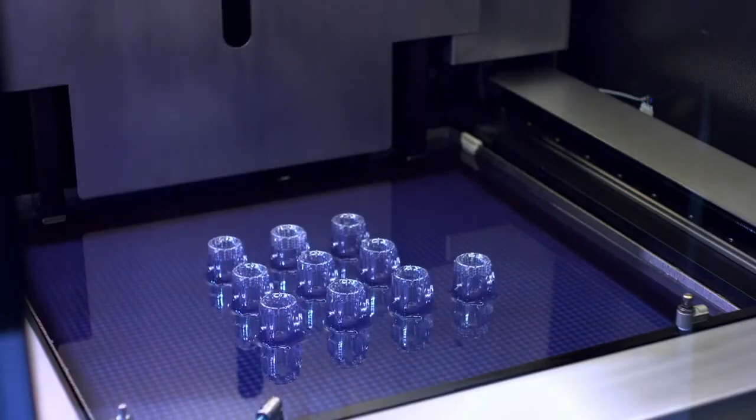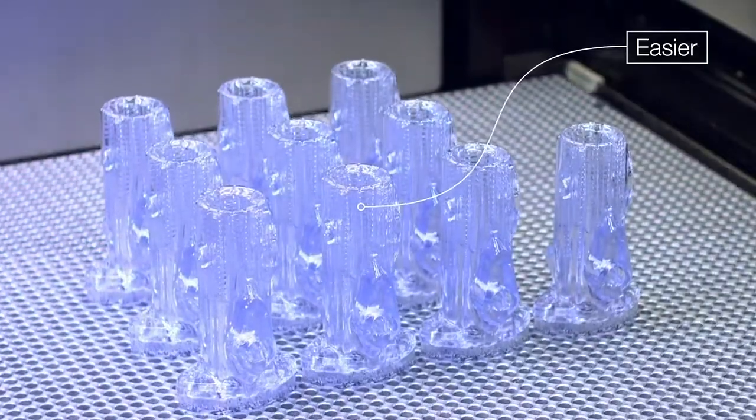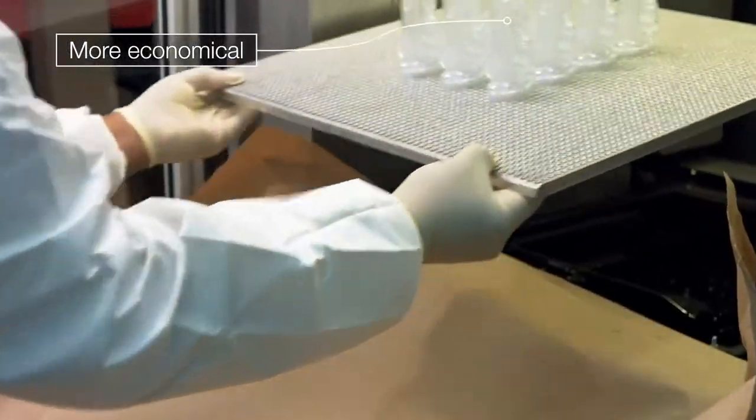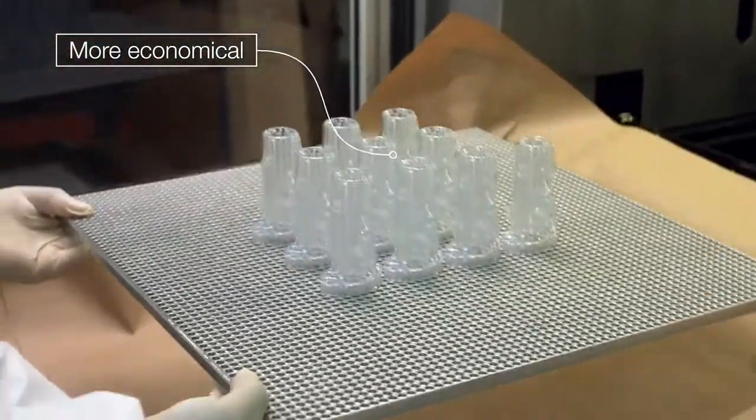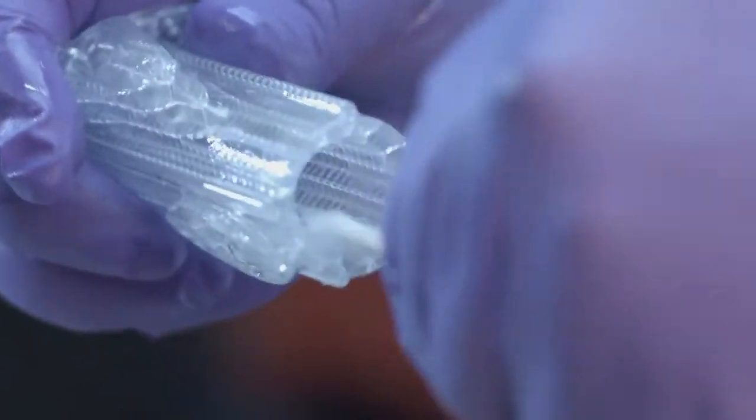By utilizing the V650 for investment casting, we make the process easier and also more economical. We actually 3D print the pattern in a very unique process where it's mostly hollow.